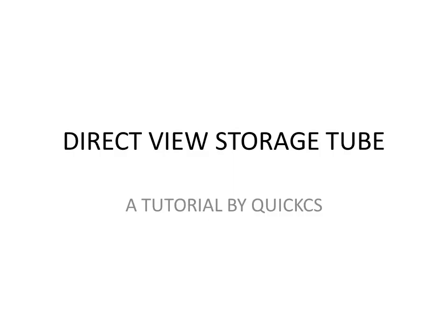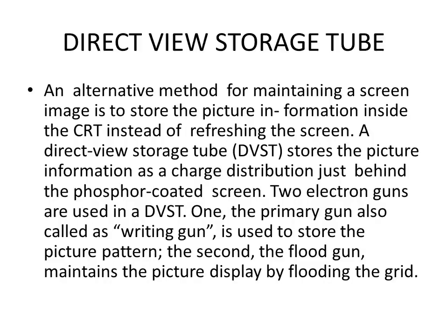Today we'll be learning about the Direct View Storage Tube — a quick tutorial by Quick CS. An alternate method for maintaining a screen image is to store the picture information inside the CRT instead of refreshing the screen. A Direct View Storage Tube, also called DVST, stores the picture information as a charge distribution just behind the phosphor-coated screen. Two electron guns are used in DVST — unlike RGB which uses three guns, DVST uses two. The primary gun, also called the writing gun, stores the picture pattern, and the second flood gun maintains the picture display by flooding the grid.